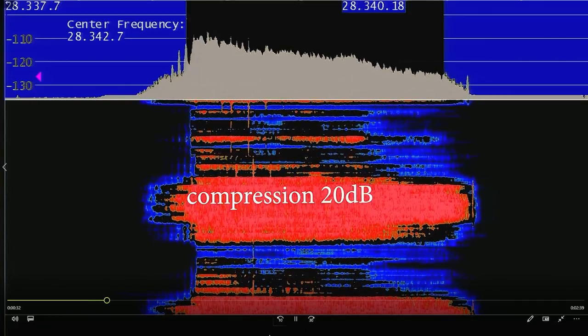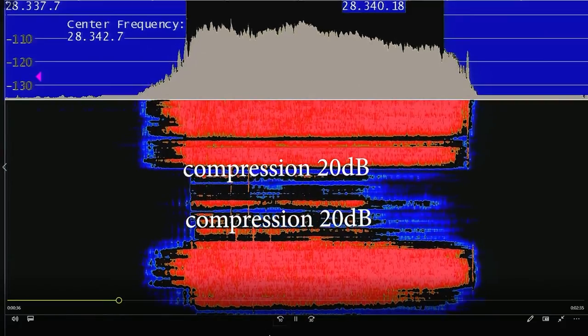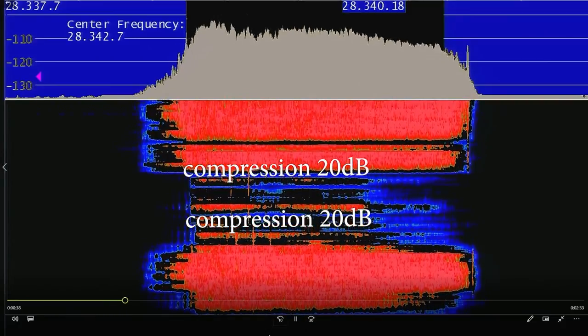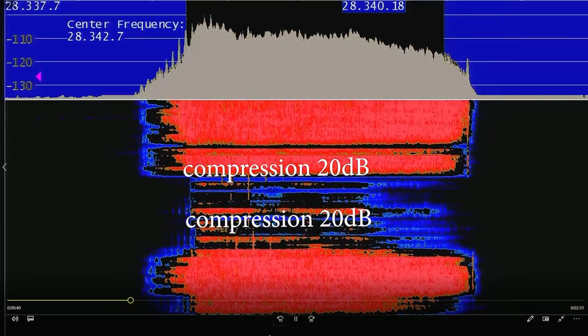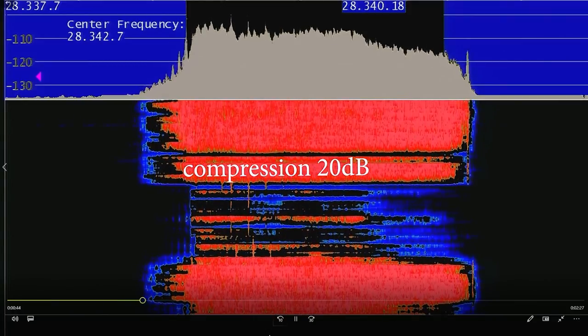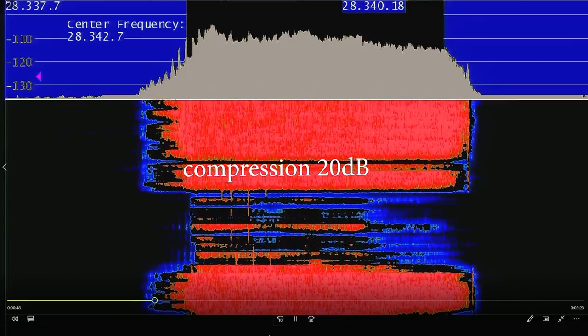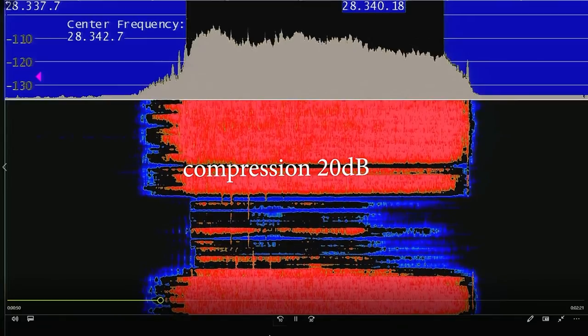Turn the compressor up. Mic gain is at 3. It's just no indication on ALC. 1 bar on ALC. Turn mic gain up. Mic gain is on full. 1, 2, 3, 4, 5.